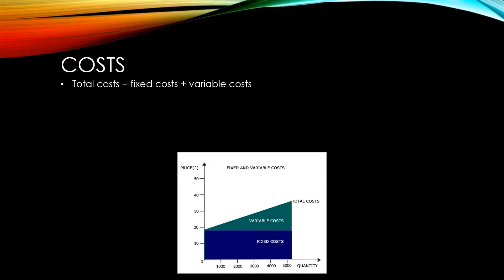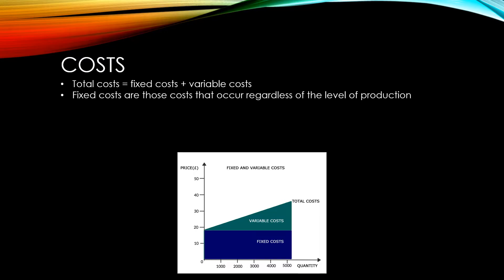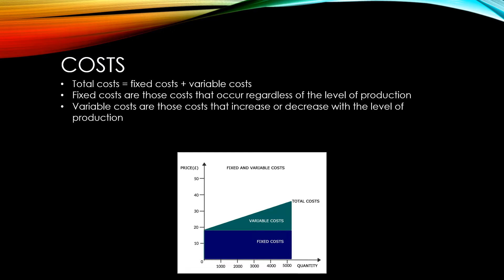Total costs can be split into fixed costs and variable costs. Fixed costs are those that occur regardless of the level of production. Variable costs are those that increase or decrease depending on the level of production. If we consider something like a pizza store, they would always have to pay their rent or mortgage — so this is a fixed cost. On the other hand, the amount of ingredients they pay for would depend on how many pizzas they're selling, and this would be a variable cost.